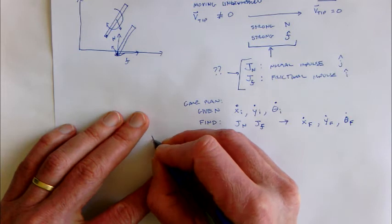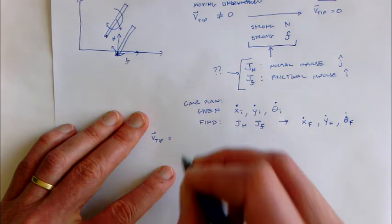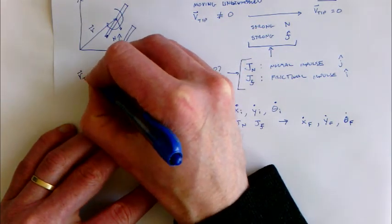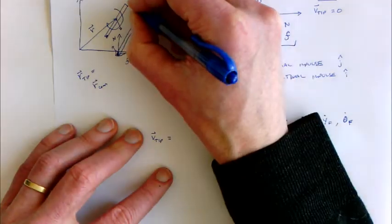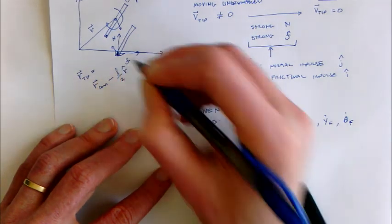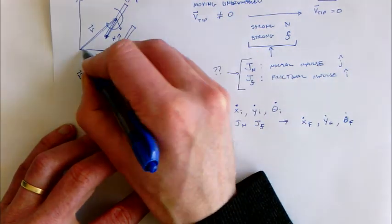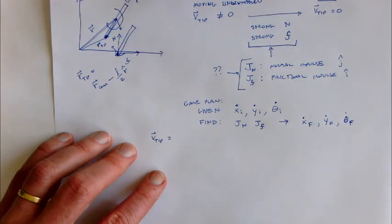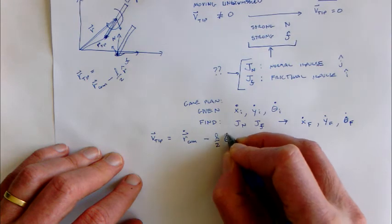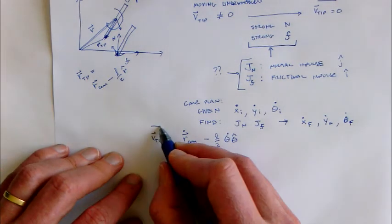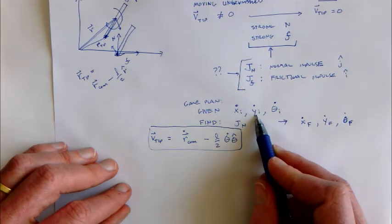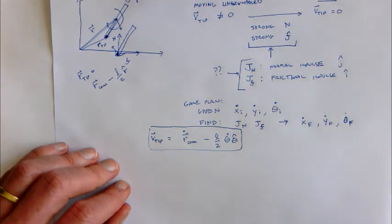Let's write out an expression for the tip velocity. In general, v-tip is going to be the velocity of the center of mass. The position of the tip is the position of the center of mass minus L/2 times r-hat — going up to the center of mass and then down to the tip. That means the velocity of the tip is simply the velocity of the center of mass minus L/2 times theta-dot times theta-hat, and that will be true before and after.